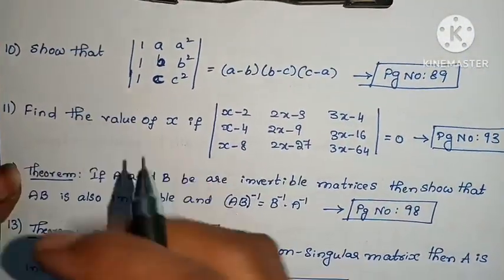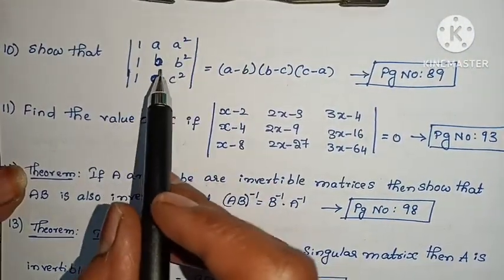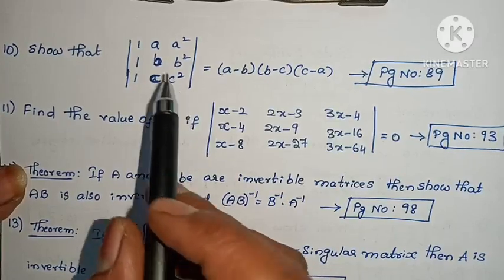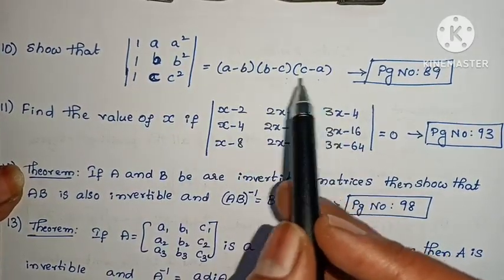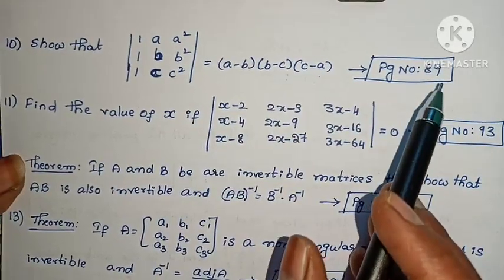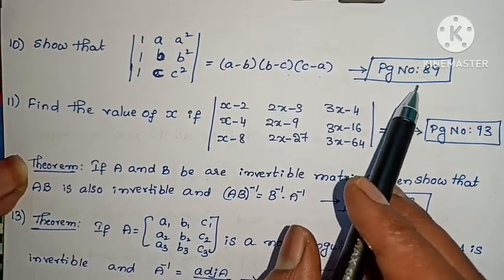Tenth question: show that |1, a, a²; 1, b, b²; 1, c, c²| = (a-b)(b-c)(c-a). Example problem, page number 89.